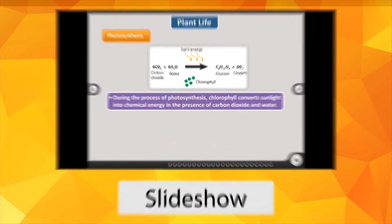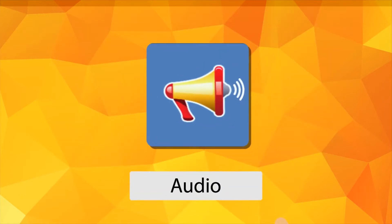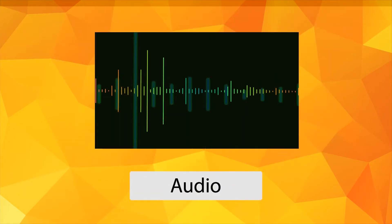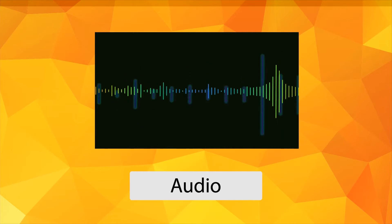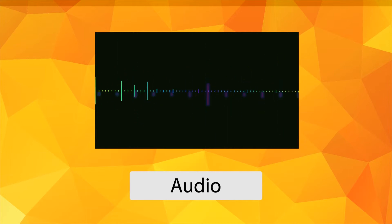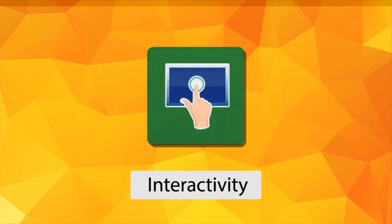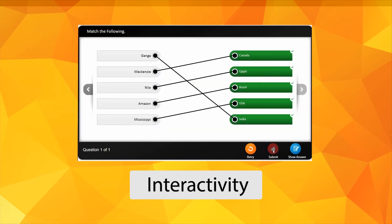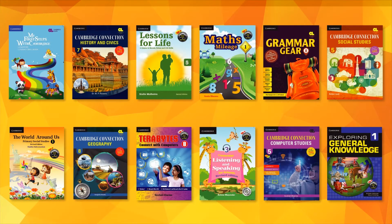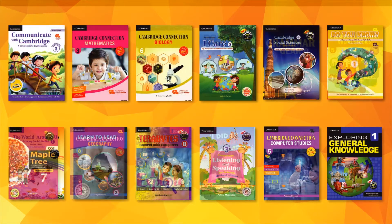Audio, available for English books, helps learners to listen and revise key concepts. Interactivity enables learners to check their understanding of key concepts from the textbook. The Cambridge Explore app is available for the following series.